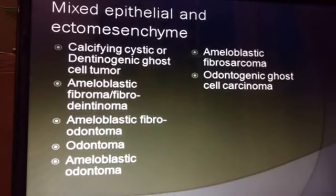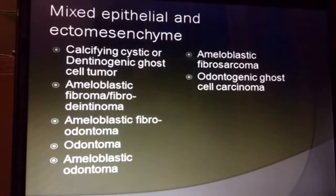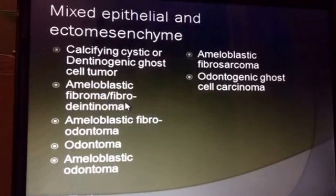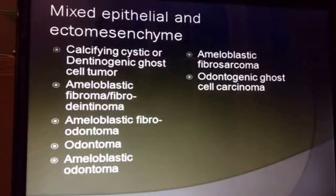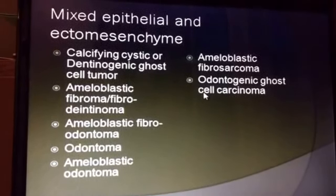Moving on to the mixed epithelial and ectomesenchymal lesions, these include the calcifying cystic or dentinogenic ghost cell tumor, the ameloblastic fibroma or fibroodontoma, odontomas, and ameloblastic odontomas on the benign side. On the malignant side there are ameloblastic fibrosarcoma and odontogenic ghost cell carcinoma, though these are fairly rare.